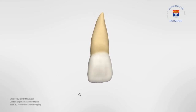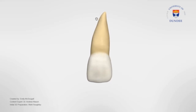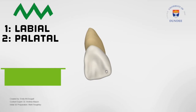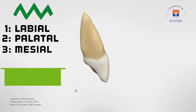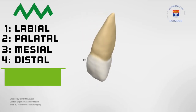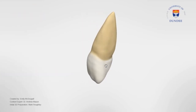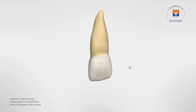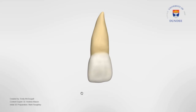We will be looking at the morphology from different viewing aspects: first the labial, followed by the palatal, then the mesial and the distal. The labial viewing aspect considers the portion of the tooth visible from the side where the lips would be.